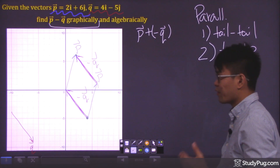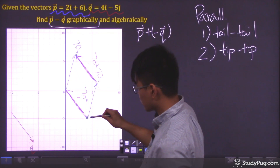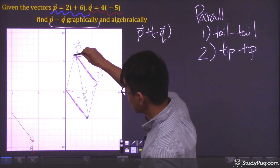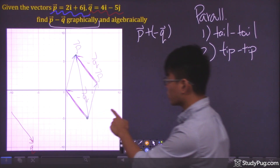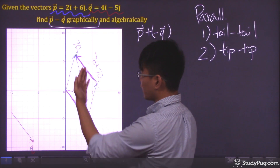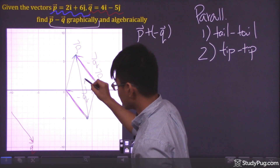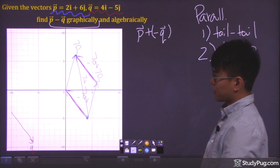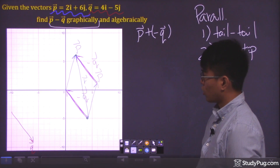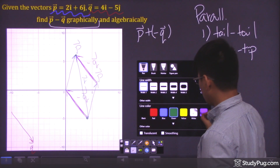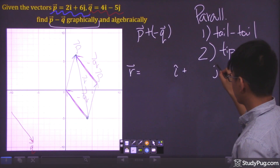Our final step is to form a vector that connects the two dots — starting from the point where the two tails are connected and pointing to the ending dot. This green vector here is our resultant vector r. We've solved the graphical part of the question, but let's also express vector r in rectangular form.